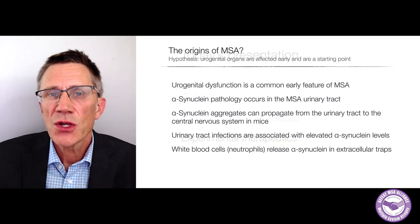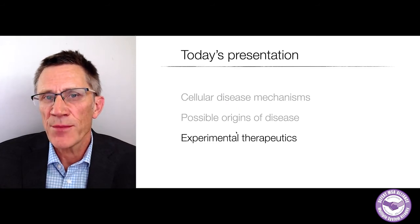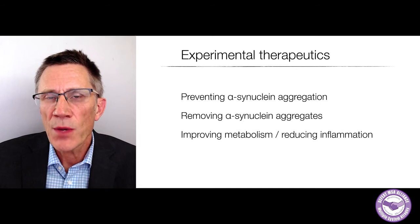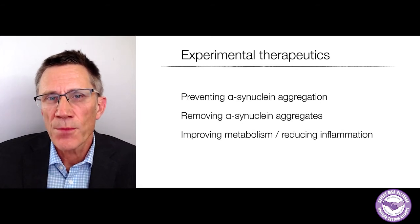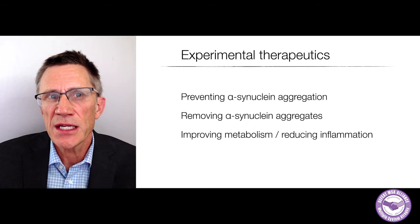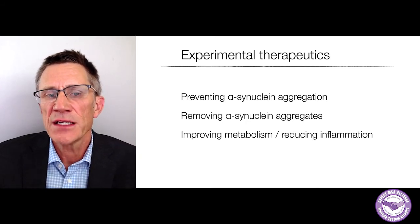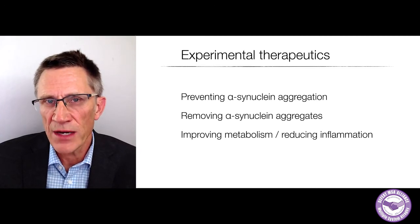Let me finish with some experimental therapeutics over the last ten to twelve minutes. I'm going to talk about three categories: preventing synuclein aggregation, removing synuclein aggregates, and improving metabolism or reducing inflammation.